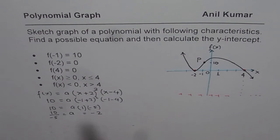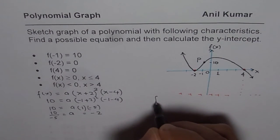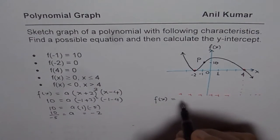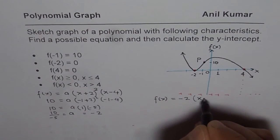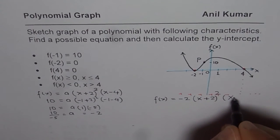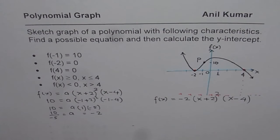So now let me rewrite this equation here. So we have f of x for the given condition as minus 2 times x plus 2 whole square times x minus 4. So that becomes the equation of this particular graph.